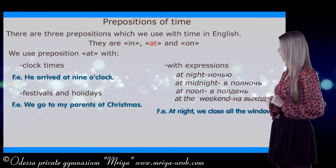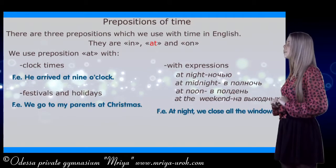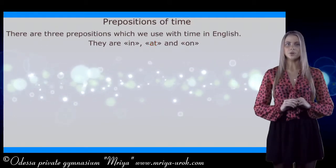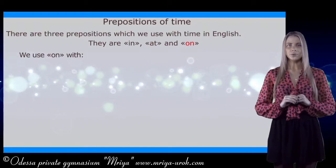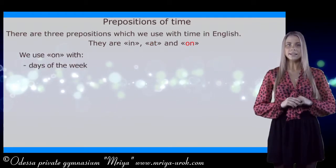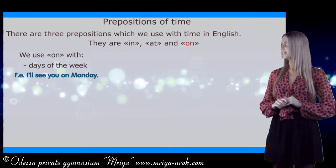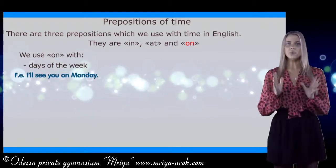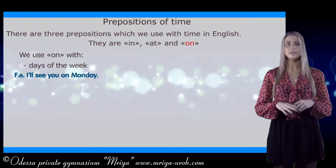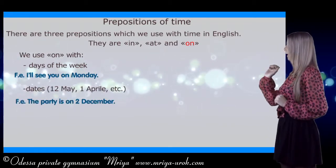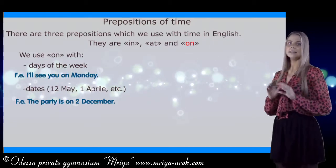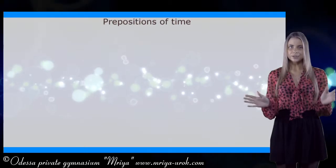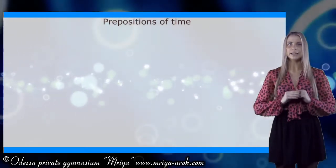Let's see the example: at night we close all the windows. Now let's speak about preposition 'on'. We use preposition 'on' with the days of the week. For example, I'll see you on Monday. And we use preposition 'on' with dates. For example, the party is on 2nd December.